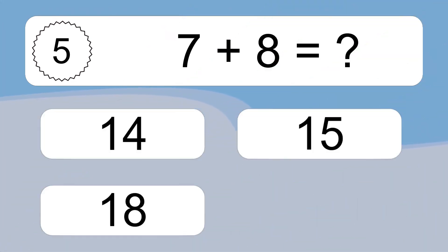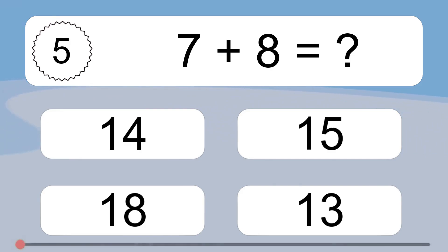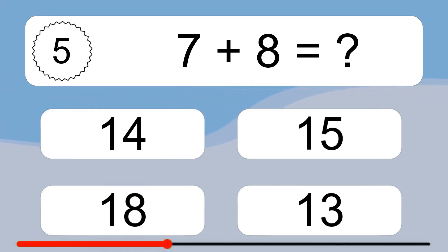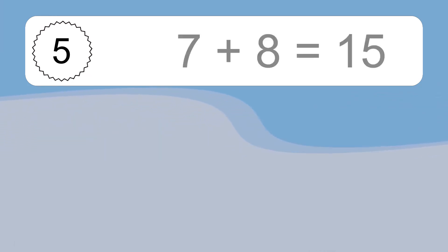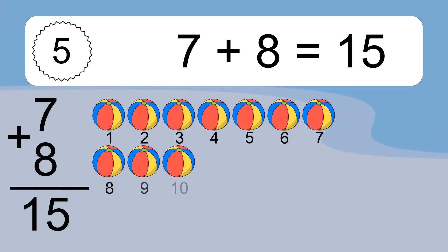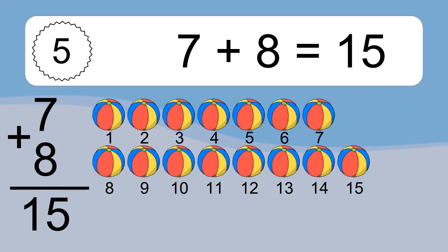7 plus 8 equals what? 7 plus 8 equals 15. Let's count it: 1, 2, 3, 4, 5, 6, 7, 8, 9, 10, 11, 12, 13, 14, 15.